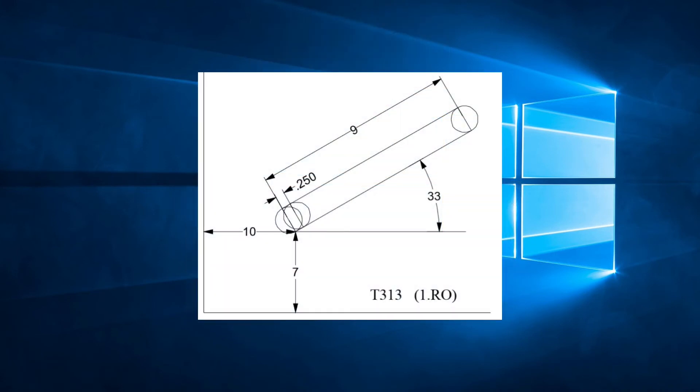If we look at this example, we have a line whose starting point is X10, Y7. The length of the line is 9 inches from the center of the first hit to the center of the last hit. The angle of the line is 33 degrees and the tool used is a 1 inch round in station T313. We also see the pitch specified is 0.25 inches between hits.